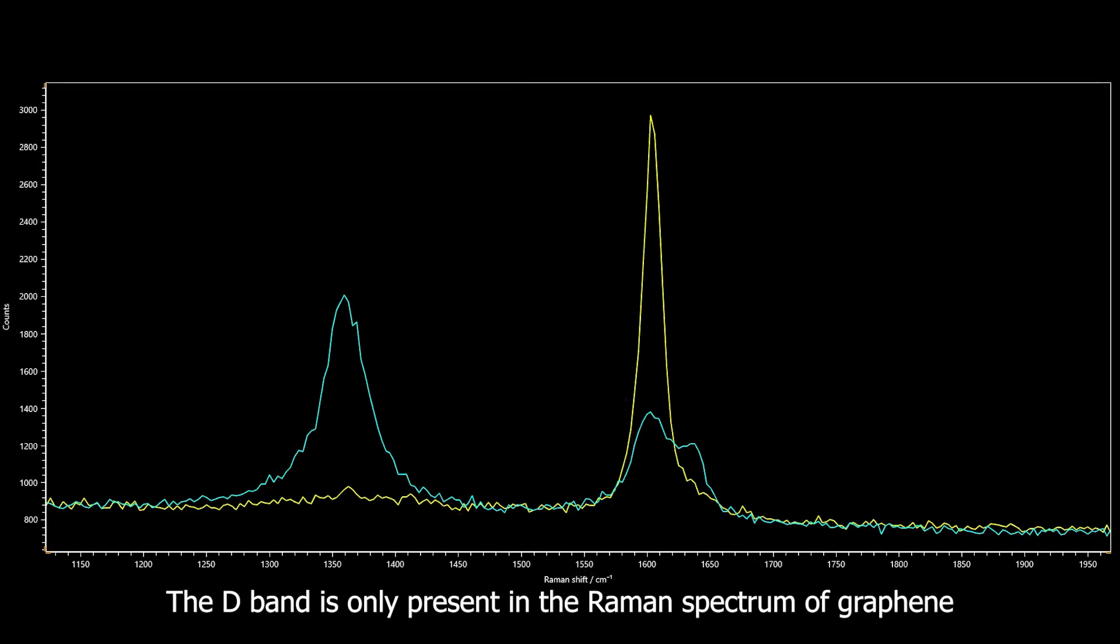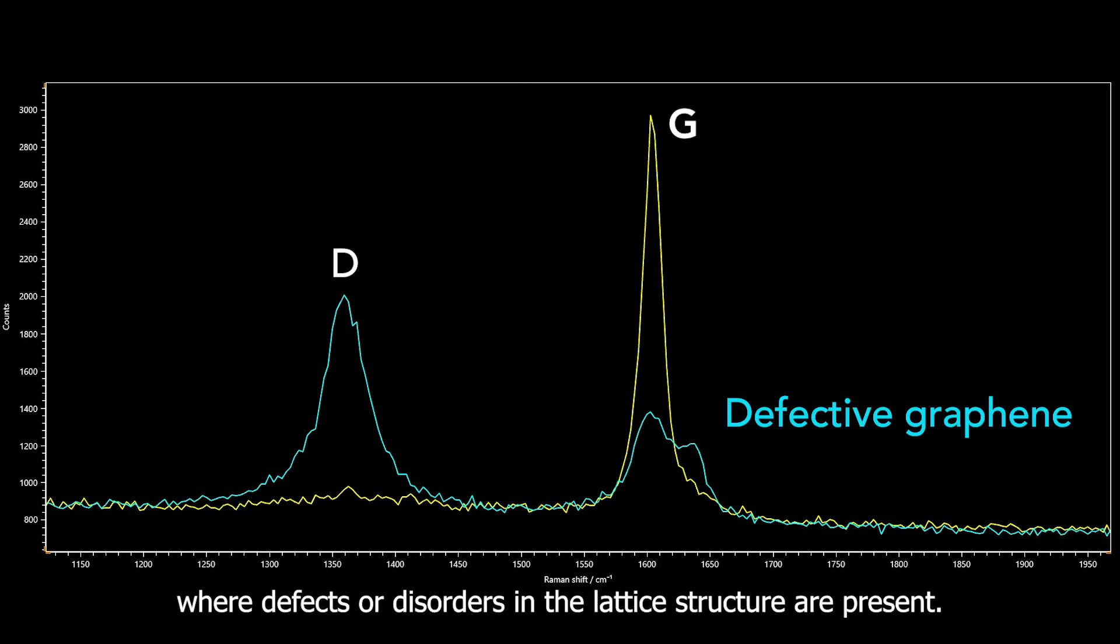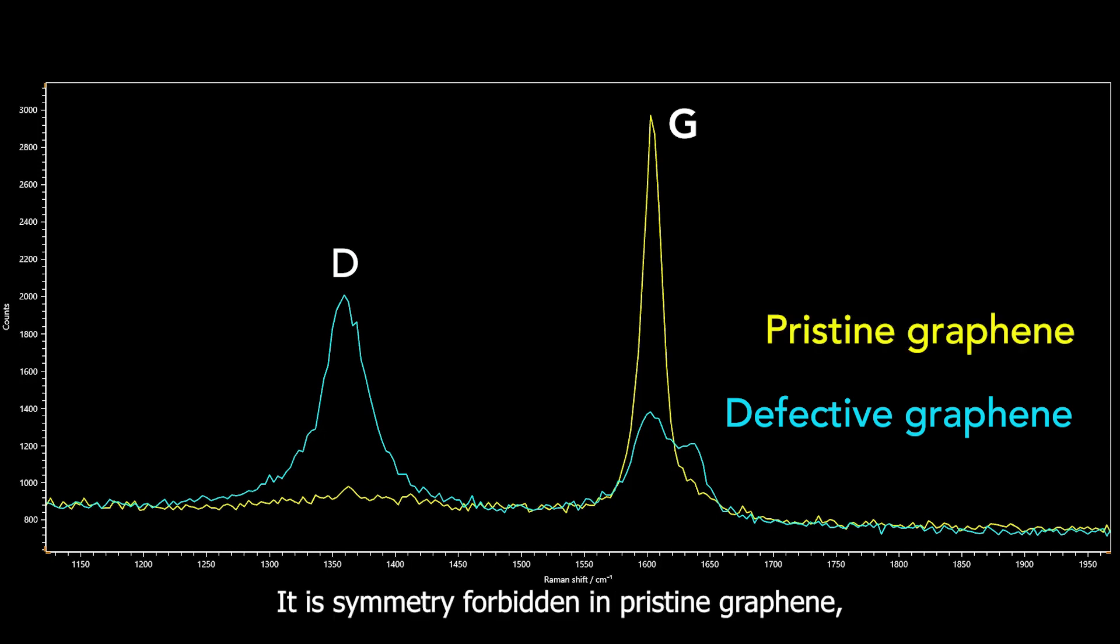The D band is only present in the Raman spectrum of graphene where defects or disorders in the lattice structure are present. It is symmetry forbidden in pristine graphene and the intensity of the D band can be directly correlated to the amount of disorder in the region probed.